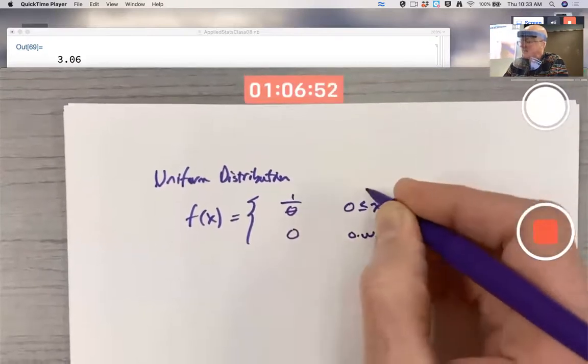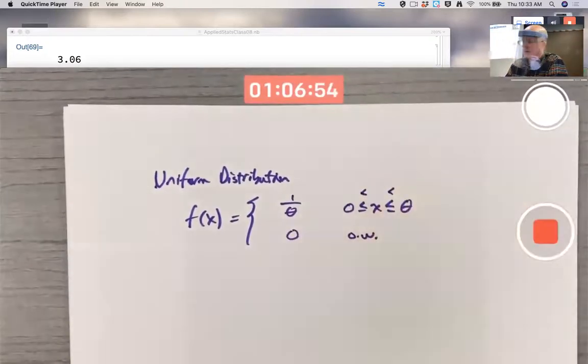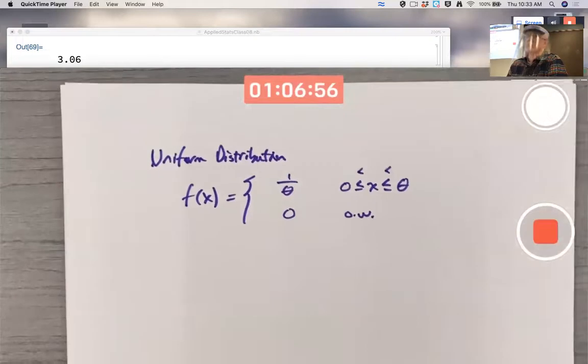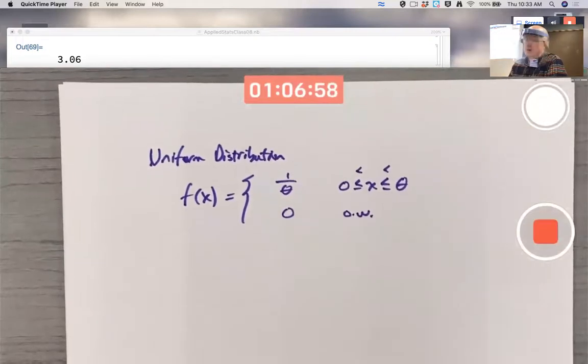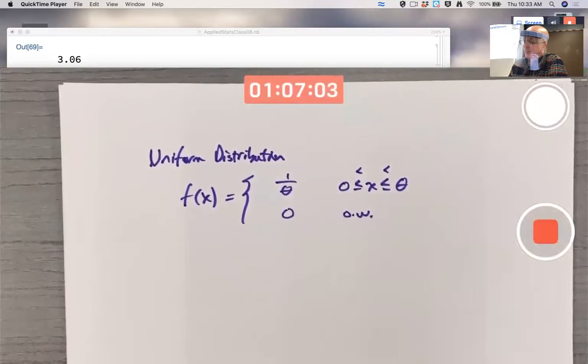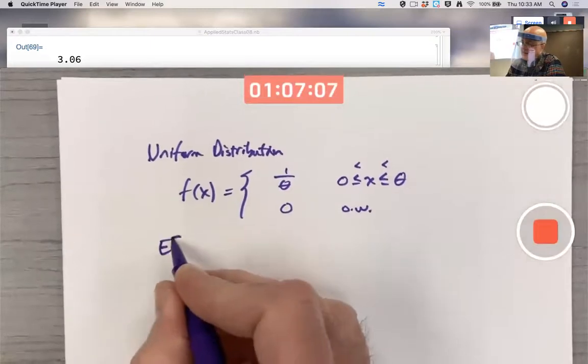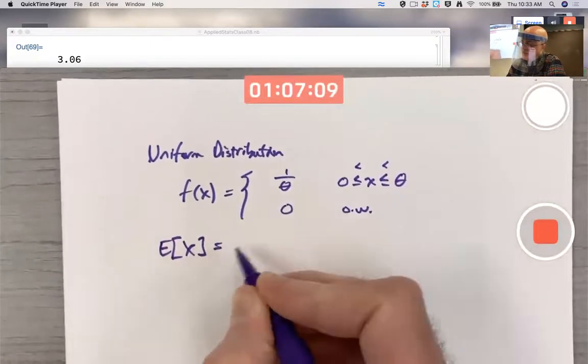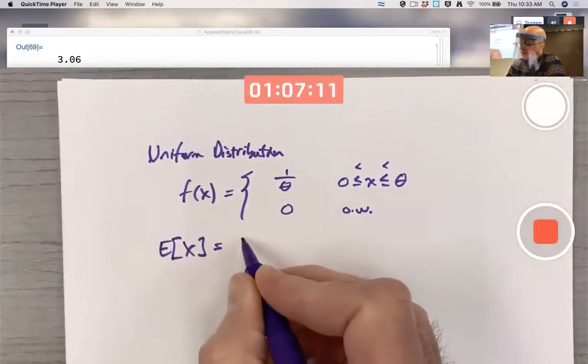And whether I use strict inequalities or non-strict inequalities there doesn't really matter. Continuous random variable. The expected value you've seen before here, and it makes good intuitive sense, would be theta over 2.